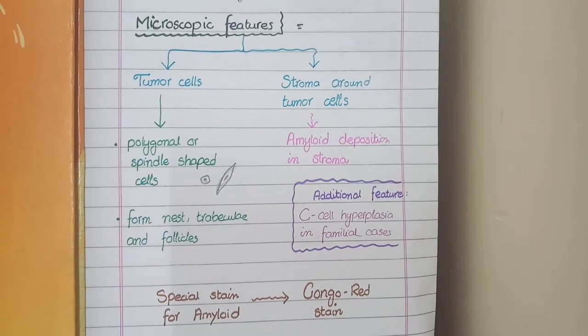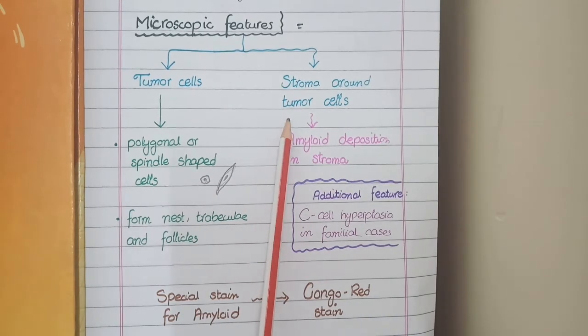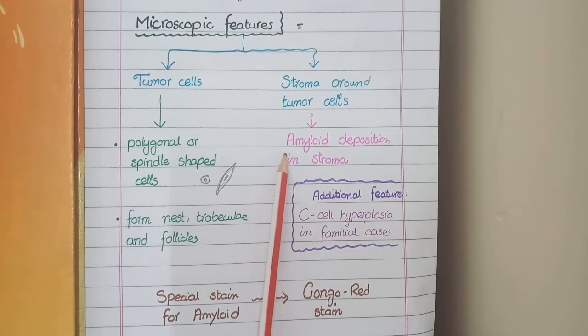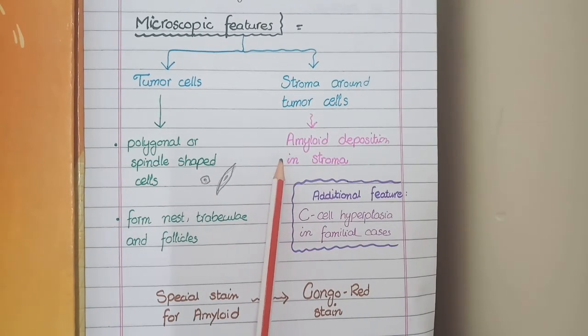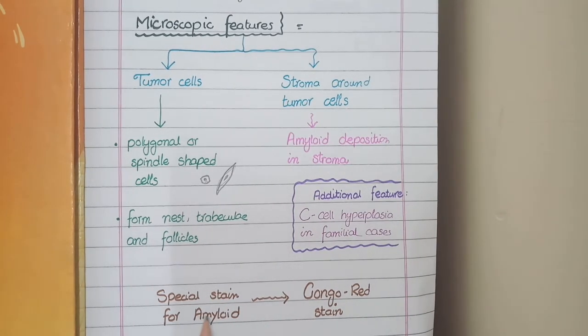As far as the stroma around these tumor cells is concerned, it characteristically shows amyloid deposition, which is visible as eosinophilic material. The special stain for this amyloid is Congo red stain.